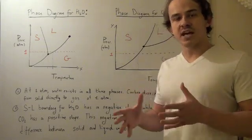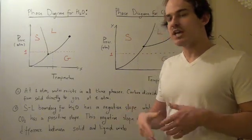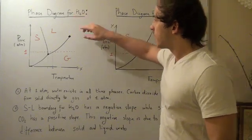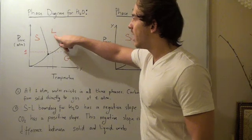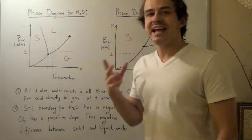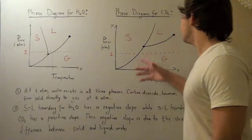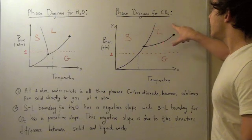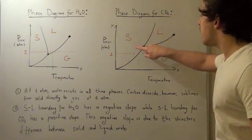The second main difference, and perhaps the more important difference, is the following. For the phase diagram of water, the boundary between the solid and the liquid line, this line, has a negative slope. While for the carbon dioxide phase diagram, the boundary between the solid and liquid is positive. It has a positive slope.